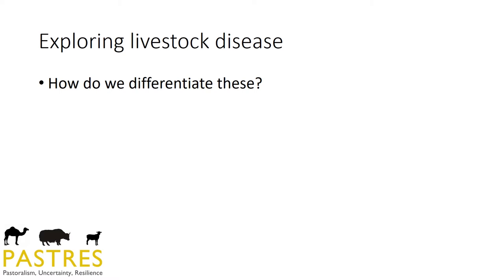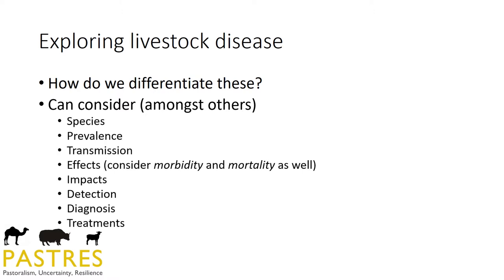Looking at classic ways of differentiating livestock disease, we can consider a whole raft of different options. You can look at diseases by species, by prevalence, by transmission routes, by effect — and bear in mind we'll dig into effect on whom, for what, how, where. There are two terms: morbidity and mortality. Morbidity is the state of being diseased and mortality is the state of being dead. We've also got impacts, and detection versus diagnosis — these are different things but some texts conflate the two — and treatments.